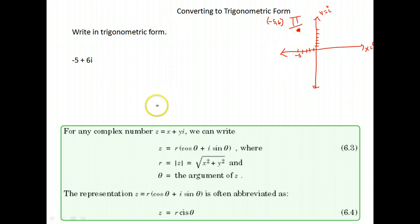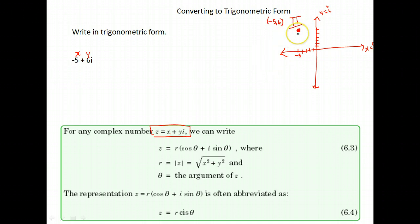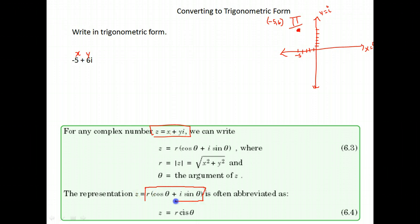Here we're using the complex number in the form x plus yi — x is the real part of your number, and y is the imaginary part. The first thing we need to do after establishing which quadrant we're in is find r, because we're going to write this in trigonometric form: r times cosine theta plus i sine theta, or the abbreviation r cis theta, which stands for cosine i sine theta.